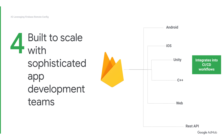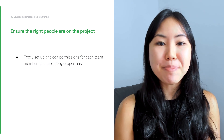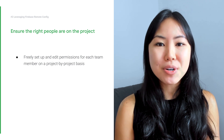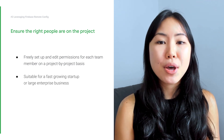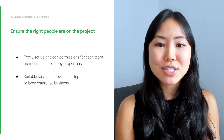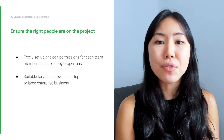Fourth, Remote Config was built to scale with sophisticated app development teams. Remote Config serves billions of requests a day and is made available on all major platforms, including Android, iOS, Unity, C++, and the web. You can leverage the REST API to seamlessly integrate into your CI/CD workflows. You can also freely set up and edit permissions for each team member on a project-by-project basis to ensure that the right people in your team have access to your config. Whether you are a fast-growing startup or a large enterprise business, you can rely on Remote Config to give you precise visibility and control over your app's configuration.